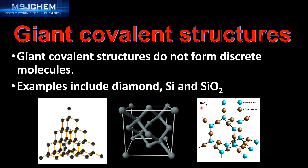If we look at the structure of silicon dioxide (SiO2), you can see that each silicon atom is bonded to four oxygen atoms, and each oxygen atom is bonded to two silicon atoms.